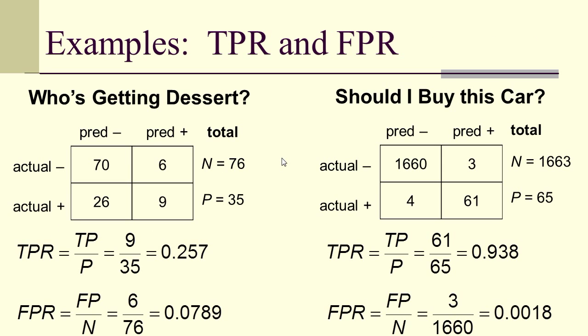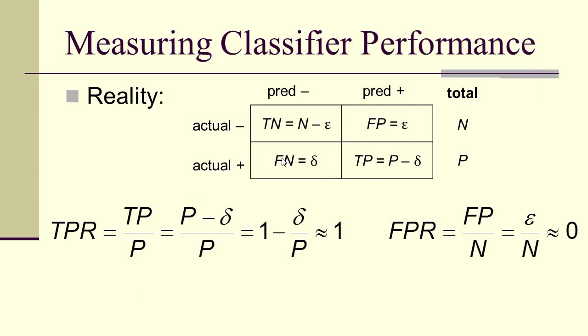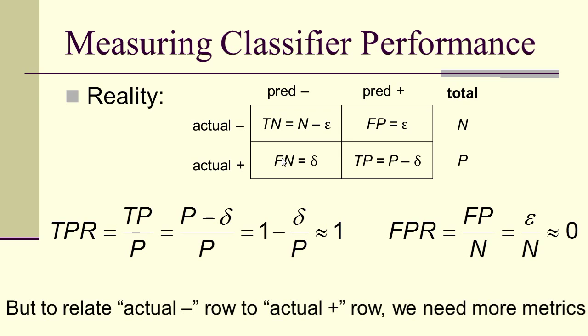Looking at our examples: the true positive rate for who's getting dessert is not very close to 1, but for should I buy this car at 93.8%, it is approaching 1. The false positive rate in both cases is relatively close to 0. So the true positive rate should be close to 1, and the false positive rate close to 0. But how do we relate the actual-negative row to the actual-positive row? We're going to need more metrics to relate the two rows to each other.